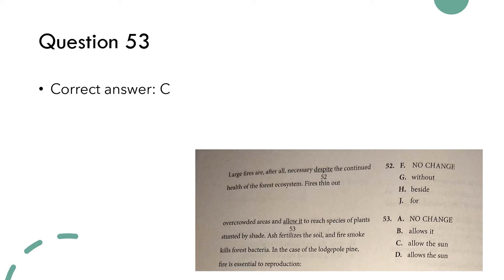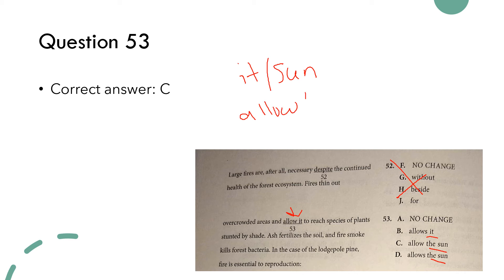Now let's work on question 53, where 'allow it' is what's underlined. Looking at the answer choices, I have 'allow it,' and then 'the sun' and 'the sun' again. So there are two parts to this question: I need to decide whether it's the word 'it' or 'the sun,' and then whether it's 'allow' or 'allows.' This one is definitely a little harder because it is knowledge of language.